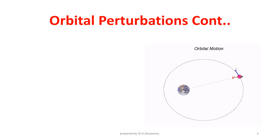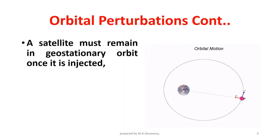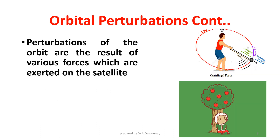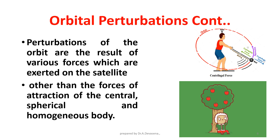A satellite must remain in geostationary orbit once it is injected. But in practice, there are many secondary influences that change the orbit slowly over a period of time. Perturbations of the orbit are the result of various forces which are exerted on the satellite, other than the forces of attraction of the central, spherical and homogeneous body.